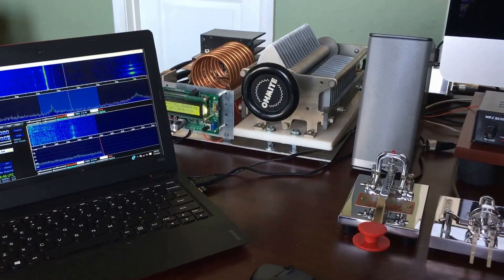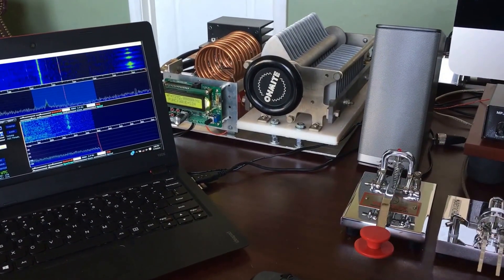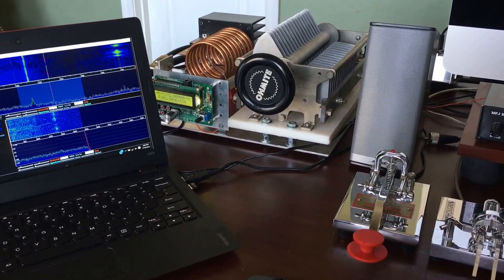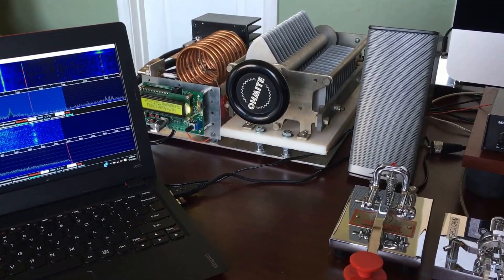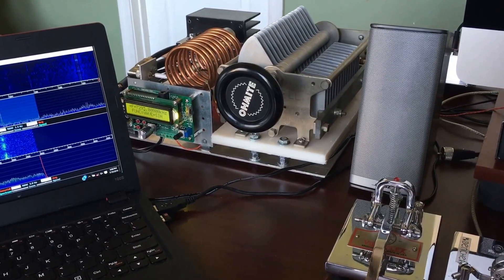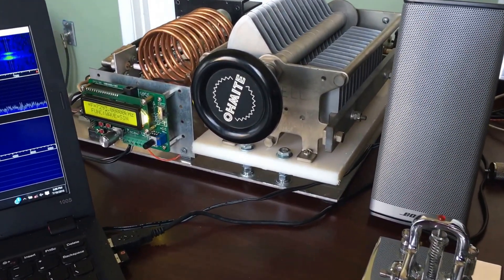Hello, my name is John. Call sign is KA1TDQ and I would like to show you my single FET class E transmitter for 40 meters. Here it is right here.